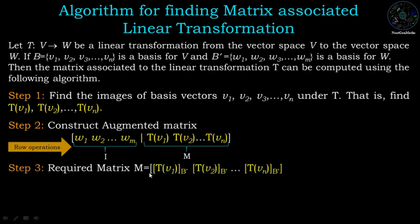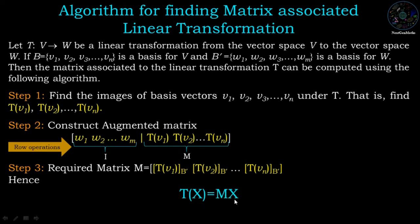Therefore the required matrix M has columns [Tv1]_B', [Tv2]_B', ..., [Tvn]_B'. The first column represents the coordinates of Tv1 with respect to B', the second column represents the coordinates of Tv2 with respect to B', and the last column represents the coordinates of Tvn with respect to B'. Hence we can say that Tx = Mx.